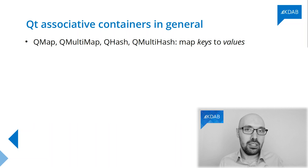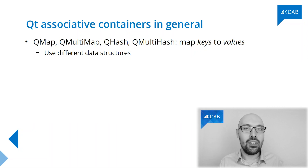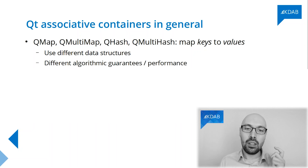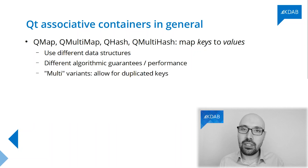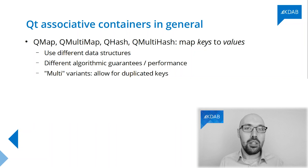The biggest difference has to do with the fact that they use different data structures to perform this mapping, and these different data structures give us different complexity guarantees and different environments. And of course there is a difference between the simple version and the multi version. The multi versions of these containers allow for duplicated keys, so in a QMultiMap or in a QMultiHash you can have the same key multiple times.